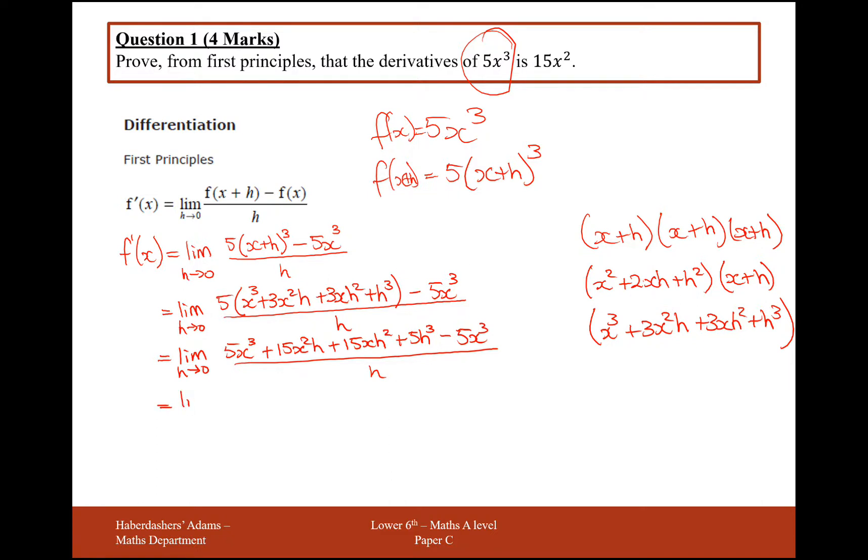Let's see what we can cancel down now. So we have the limit as h tends towards 0, we've got 5x³ and a minus 5x³, those two cancel out.